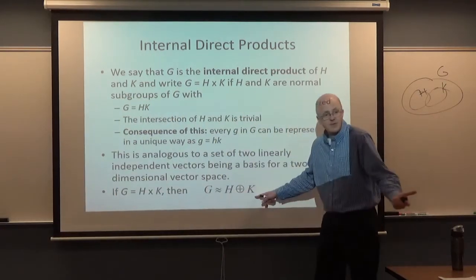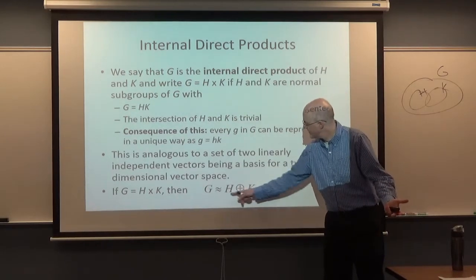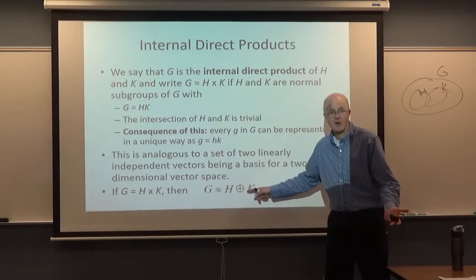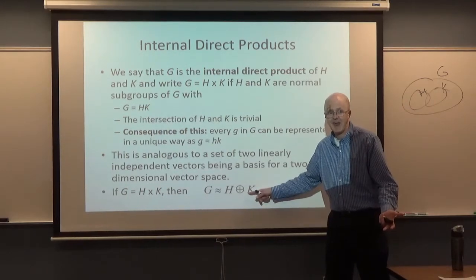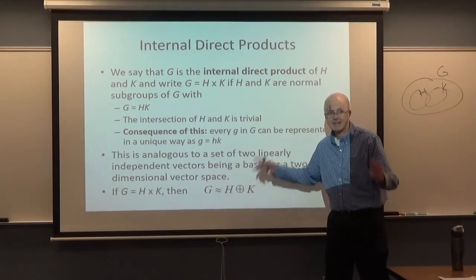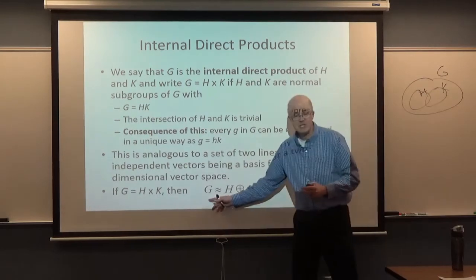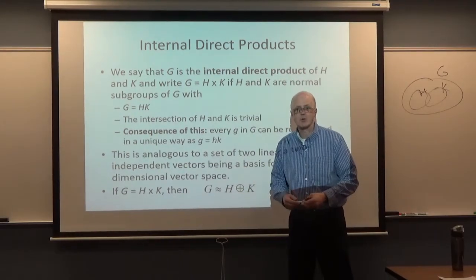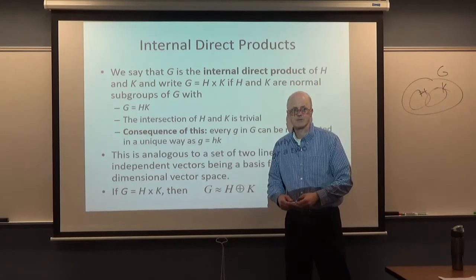This external direct product is a different group — its elements are ordered pairs (h, k) in parentheses, whereas the elements of G as an abstract group are not ordered pairs.